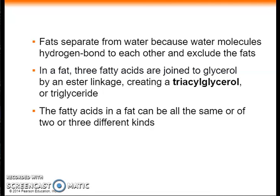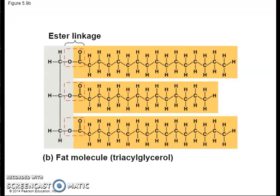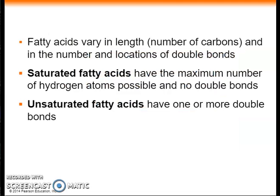Fatty acids vary in length, number of carbons, and in the number and locations of double bonds. If the fatty acid has no carbon-to-carbon double bonds, then the molecule is said to be a saturated fatty acid — meaning it is saturated with hydrogens at every possible position. If the fatty acid has one or more carbon-to-carbon double bonds formed by the removal of hydrogen atoms from the carbon skeleton, then the molecule is called an unsaturated fatty acid.